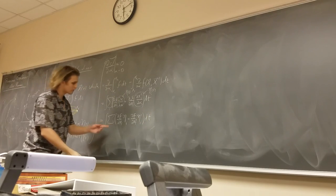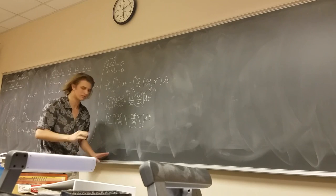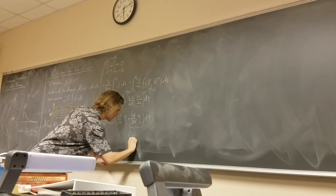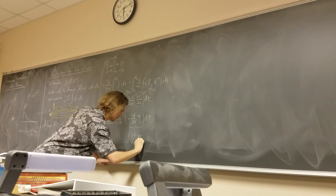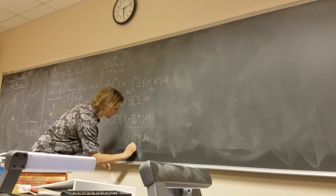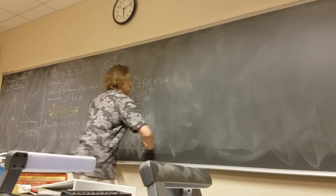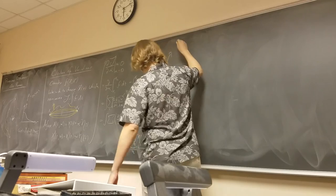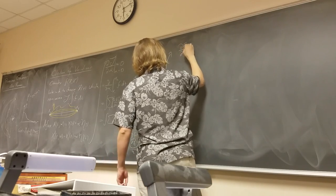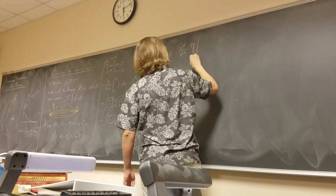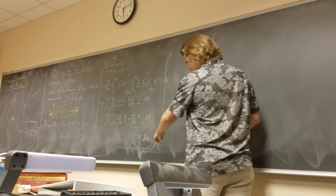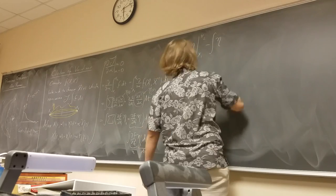Now let's take this term — we'll lose the summation for now and put it back later — and consider just the integral of partial_f/partial_x_i' * eta'_i(t). We want to integrate this by parts. We call partial_f/partial_x_i' our u and eta'_i dt our dv. So we get u times v, which is eta evaluated from x1 to x2, minus the integral of eta times the derivative of u with respect to t.